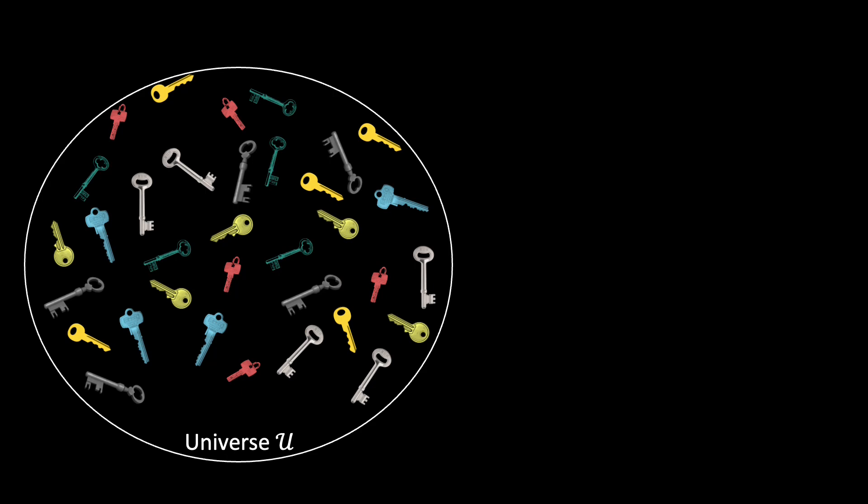First, let's define some basic concepts. Imagine a universe U which contains all possible keys, for instance all strings with at most 20 characters. Inside U, we define a set of keys N. These are the keys that we actually want to store, for instance all words in the English language.